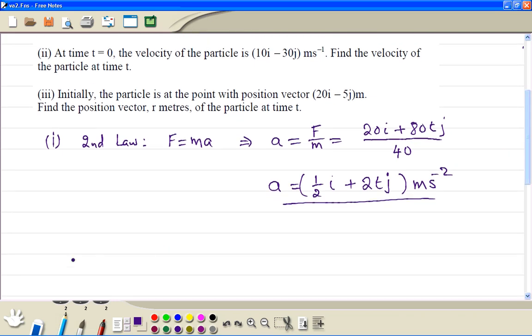Part 2. We find the velocity by integrating the acceleration equation. So integrate half i, we get half ti. Integrate 2t, we get t squared j plus the constant c.